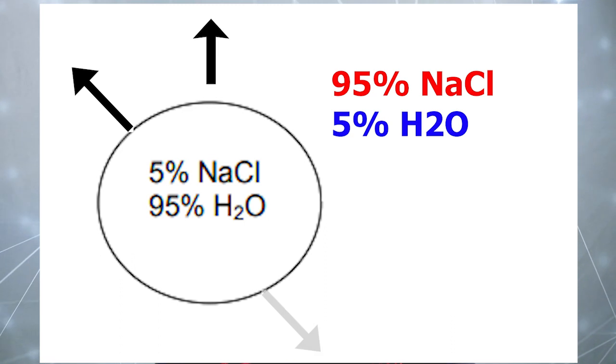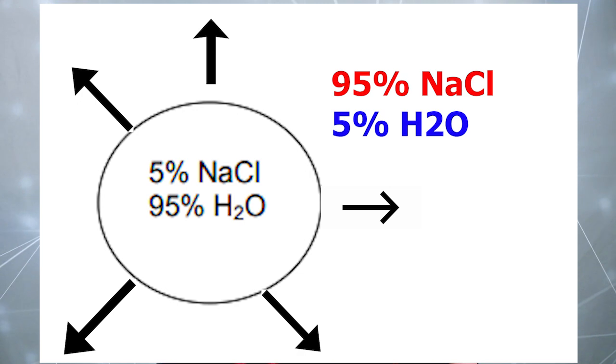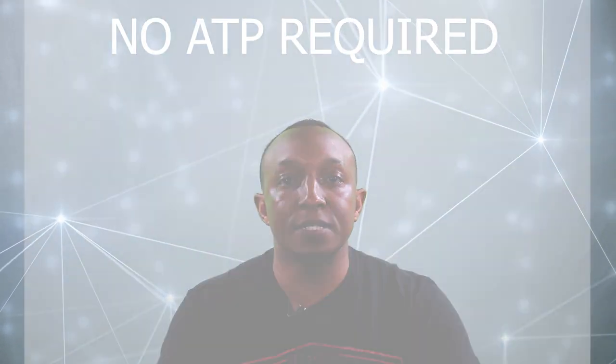Water would leave from inside of the cell to the outside of the cell from a high concentration of water to a low concentration of water to balance out the concentrations of the salt on the outside of the cell and inside of the cell. It would not require energy to do this.